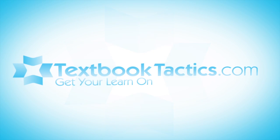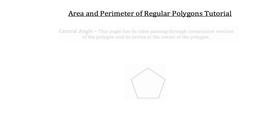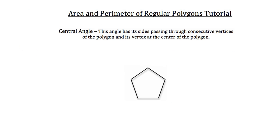This is the area and perimeter of regular polygons tutorial. A key concept to taking the area and perimeter of regular polygons is the central angle. This angle has its sides passing through consecutive vertices of the polygon and its vertex at the center of the polygon.